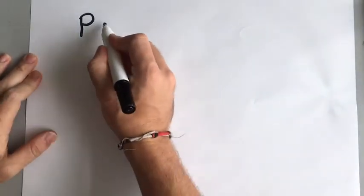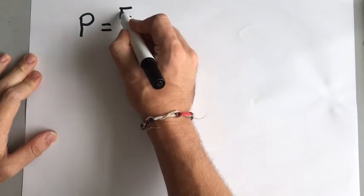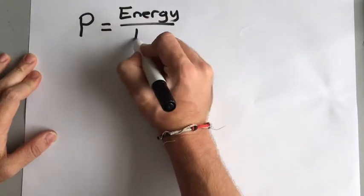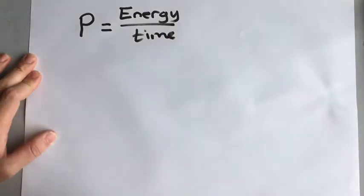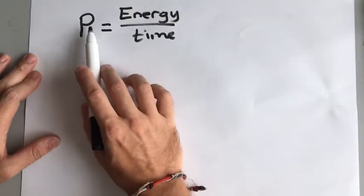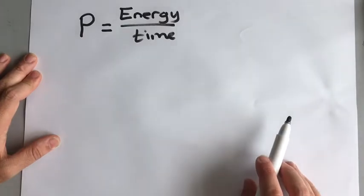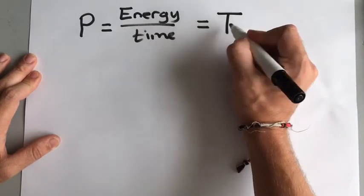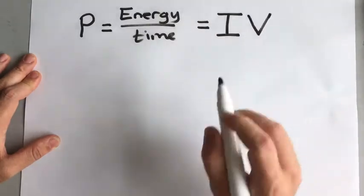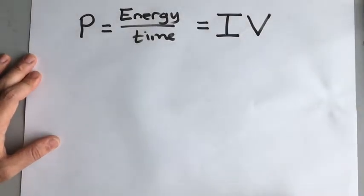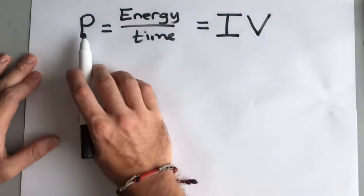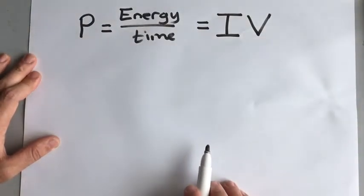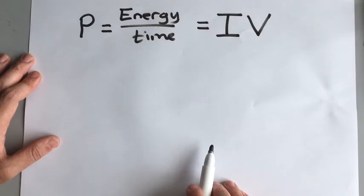Power is two things. It's the energy transferred per unit of time. So the higher the power of something, the more energy it transfers. But power is also related to an electrical circuit — it's the current multiplied by the voltage, IV. So the power is the current times the voltage, and the power is also the amount of energy transferred per unit of time.